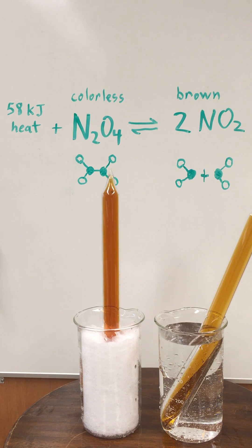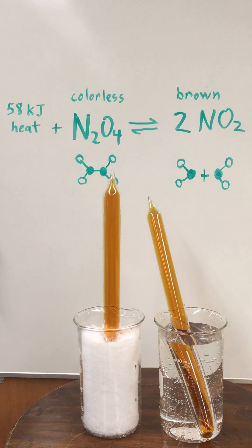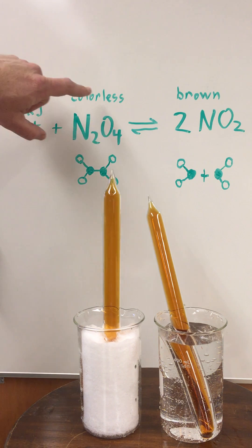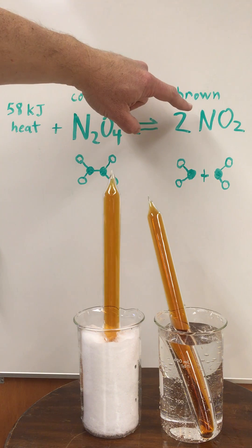Okay, and this is a great illustration of Le Chatelier's principle. As this reaction is written, this reaction is endothermic where we have heat coming in to convert one dinitrogen tetroxide to two nitrogen dioxides.